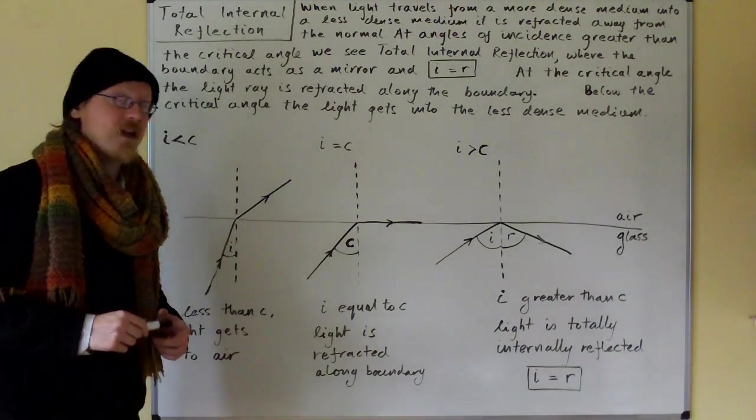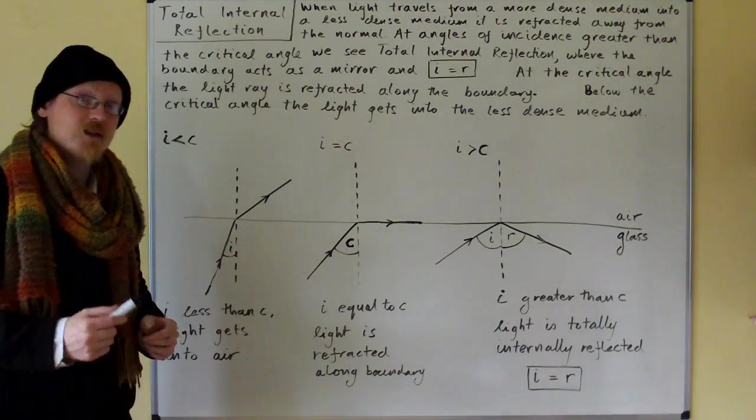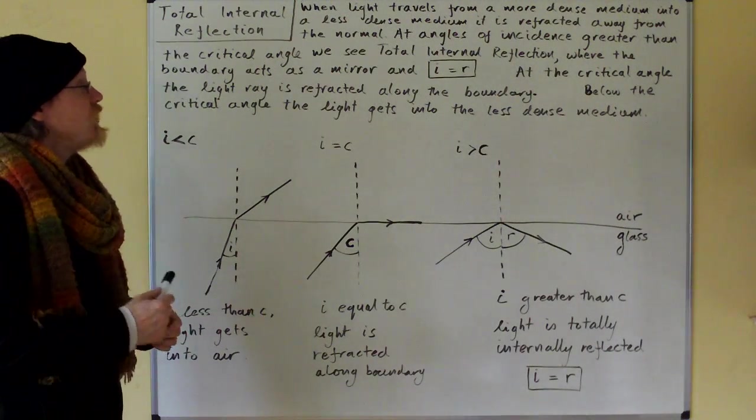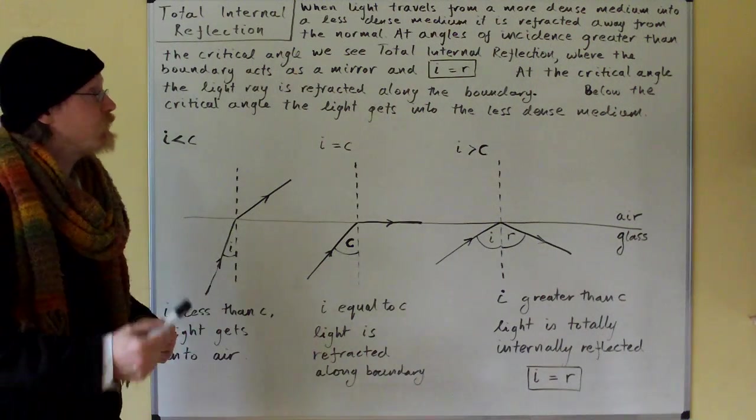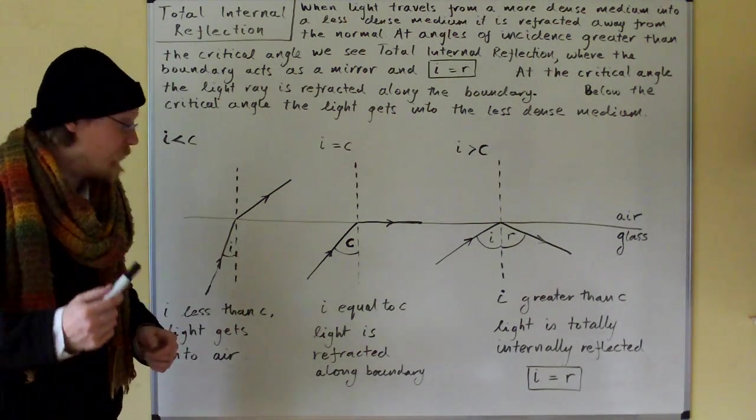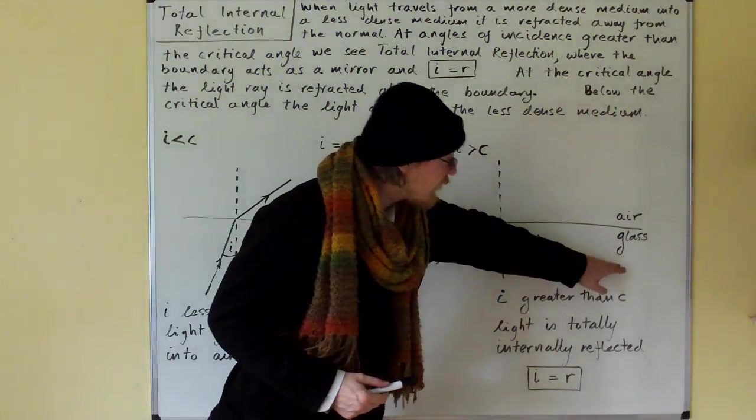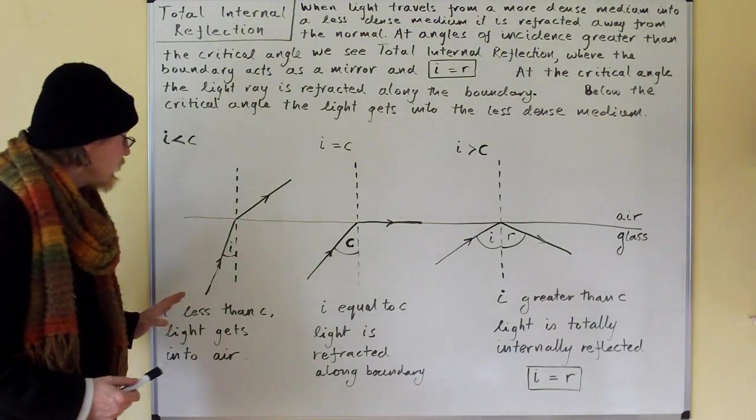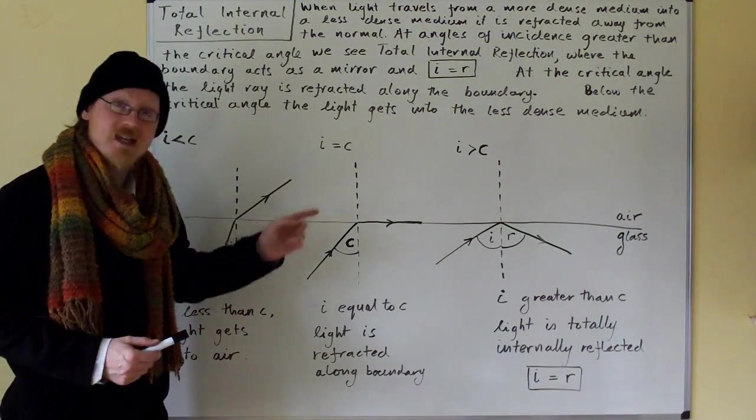Total internal reflection. When light travels from a more dense medium into a less dense medium it is refracted away from the normal. So here we've got glass and air and the light rays coming from the glass into the air.